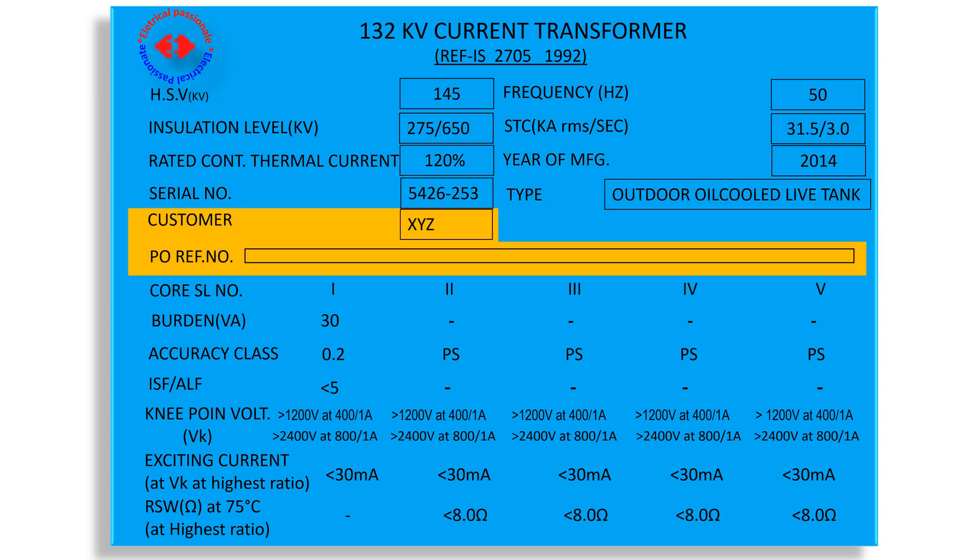Next we see customer purchase order reference number with rate. We have core serial number 1, 2, 3, 4 and 5. It has 5 cores in its secondary. In the first core, we see burden is 30VA that is 30 volt ampere. The maximum external load applied to the secondary core of the CT is called burden. In our case, we can connect maximum 30VA load in the metering core of the CT with accuracy class 0.2.